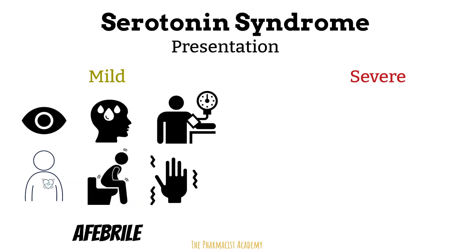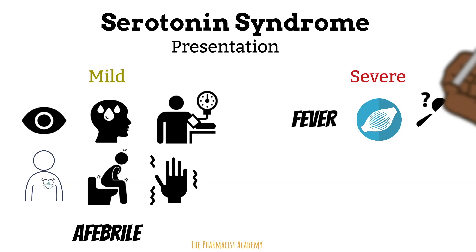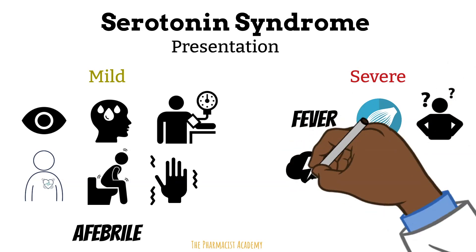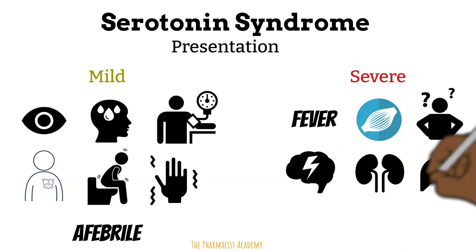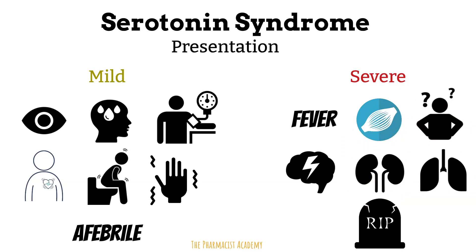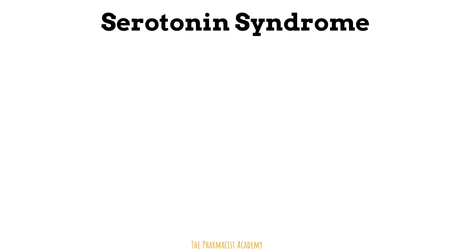Patients with severe serotonin syndrome present with the mild symptoms plus fever, muscle rigidity, and delirium. They can also develop even more severe complications such as seizures, renal failure, and respiratory dysfunction, which can lead to death. This is why as pharmacists, we must understand what causes serotonin syndrome so we can prevent or manage it.